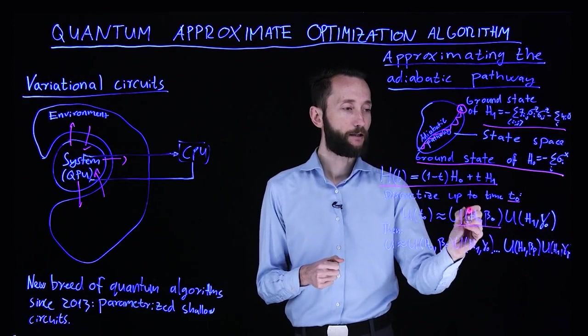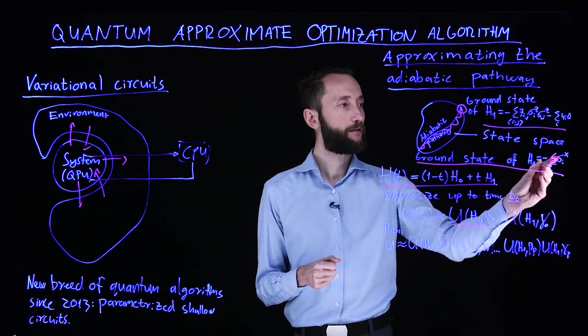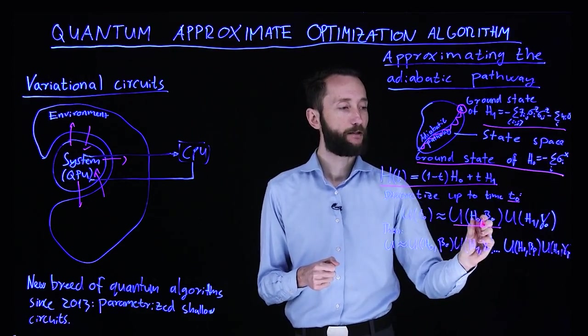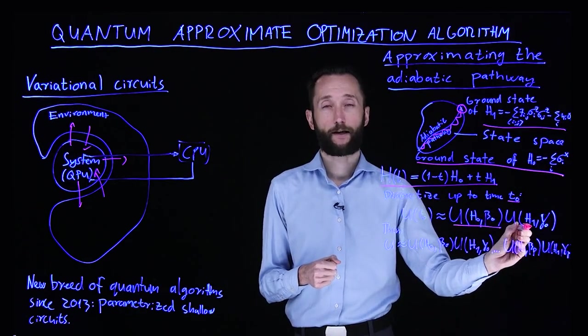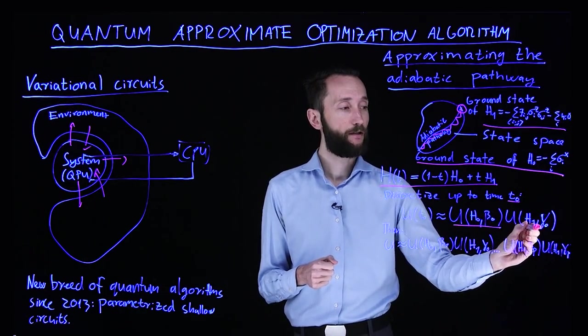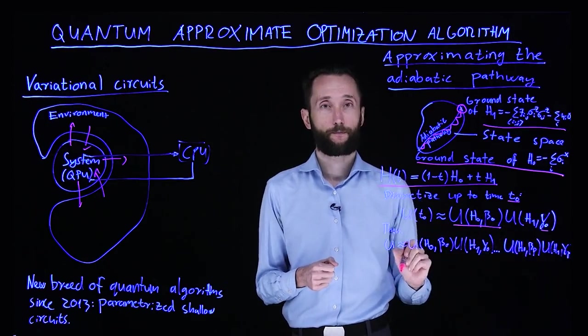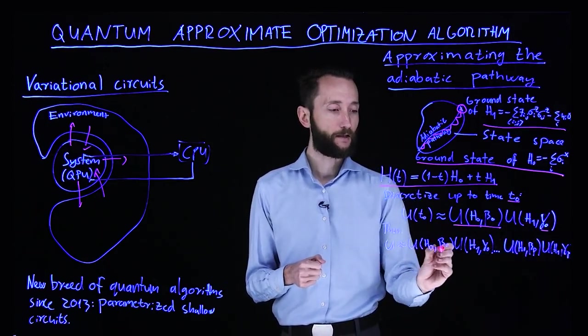First we apply the first Hamiltonian, the sigma x interaction for some duration β₀, followed by the application of the second Hamiltonian for duration γ₀. Then we can have subsequent time steps.